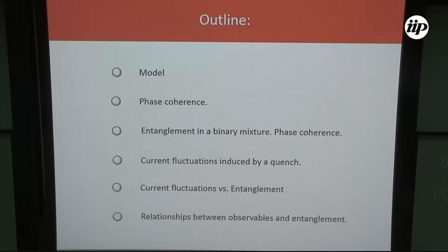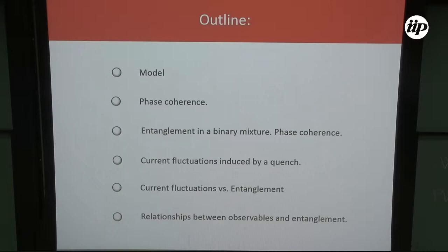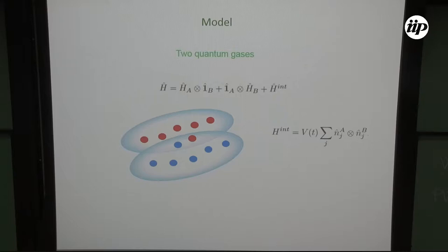The outline of my talk is as follows: I'll give a brief description of the model, then say a few words about phase coherence, and afterwards present the main results. Since entanglement is not an observable, we will use another observable — current fluctuation — which gives good insight into the entanglement. By the end of the talk I'll present a beautiful pair relationship between the visibility, the current fluctuation, and the entanglement.